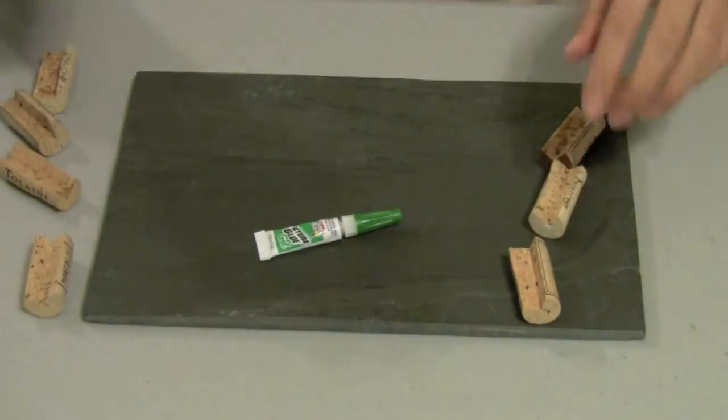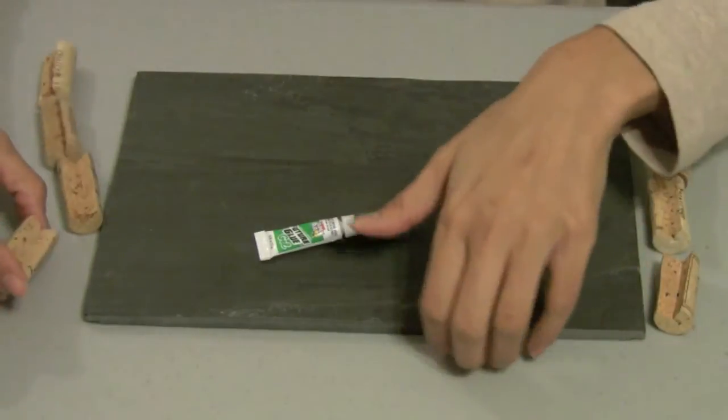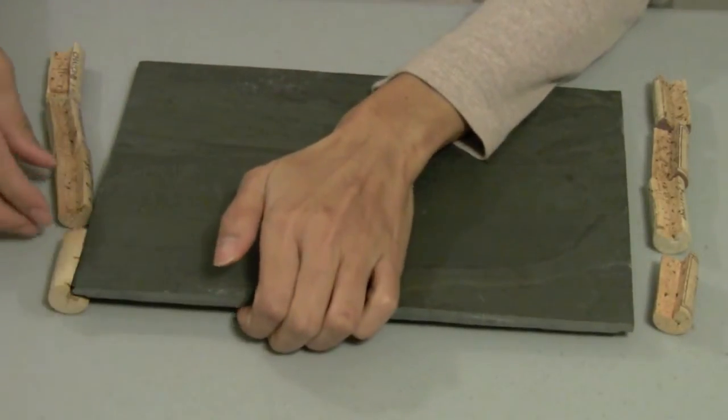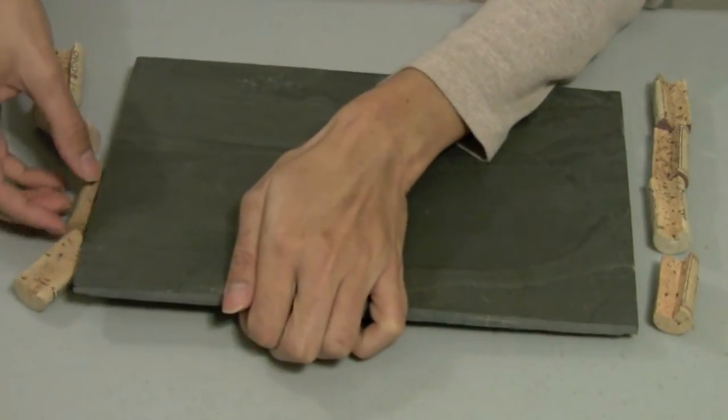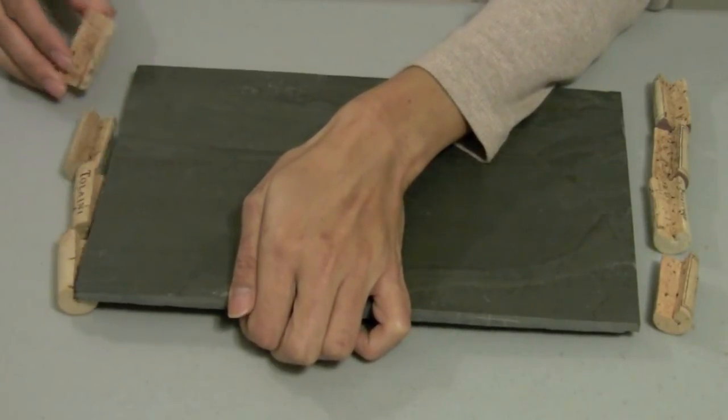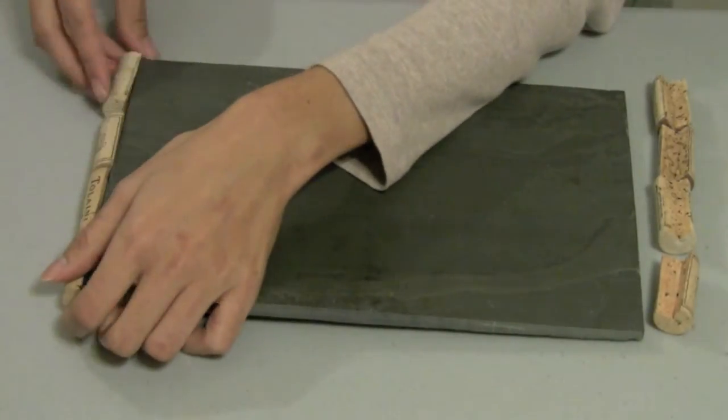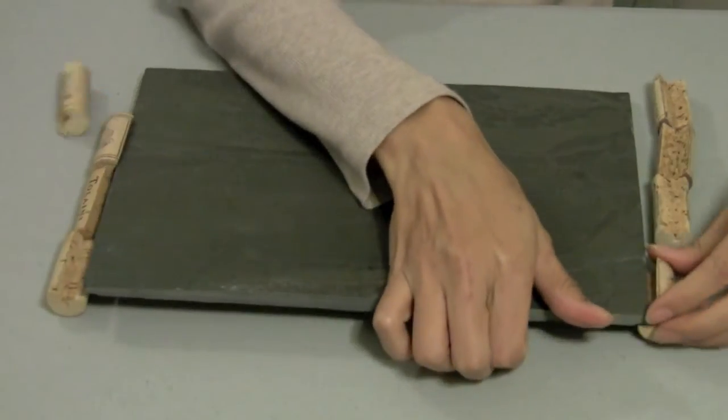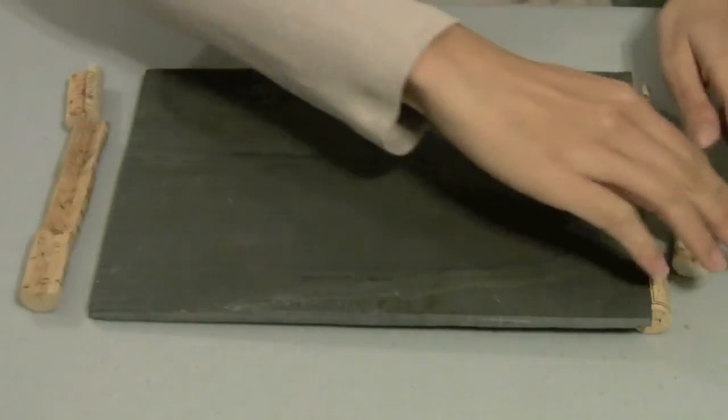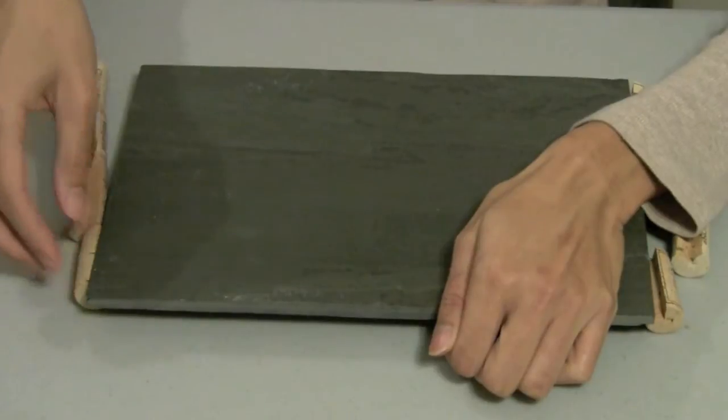And now we're going to spend a minute to arrange our corks in such a way that we know where it's going to be most stable when we put together our cheese plate. So just to show you how this cheese plate is going to work, I'm going to put all the corks in place. And we want to try to get it as stable as we can. So the corks act as both the foot and the sides of our slate cheese plate here.